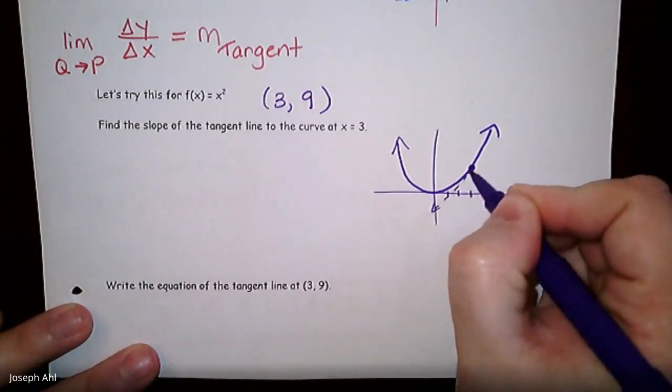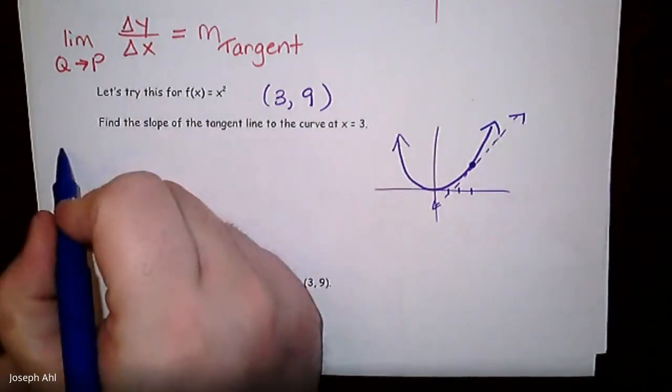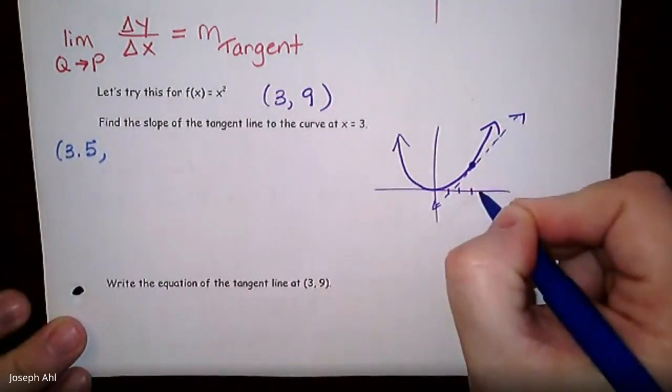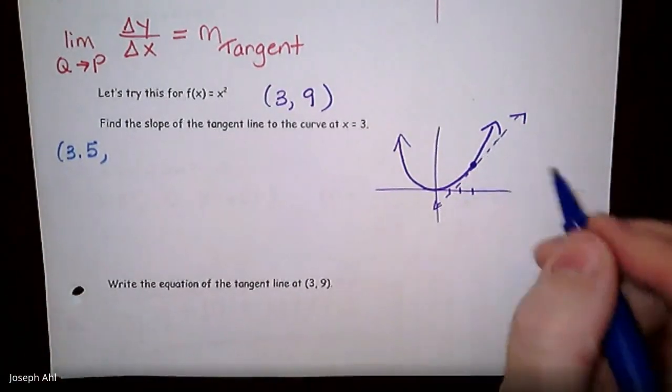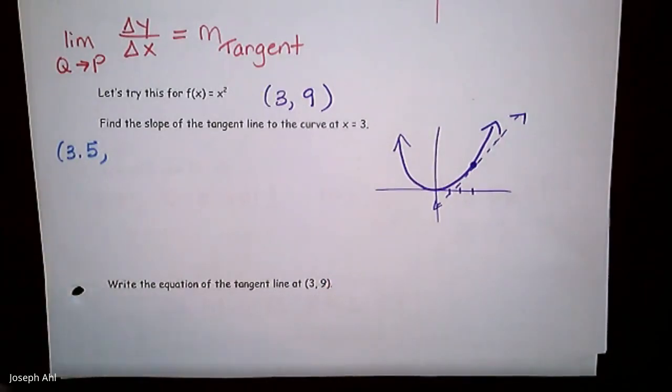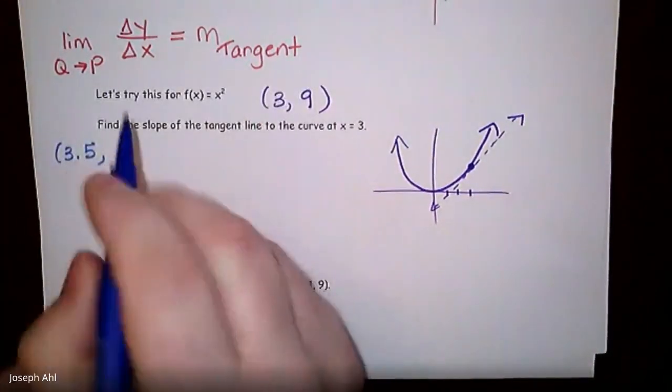So how are we going to find the slope of the tangent line? This line right here. Well, we're going to choose a point that's pretty close by. Let's start by choosing a point that's just a half unit away. What if we choose x to be 3.5? Well, the first thing you have to do is you actually have to find the y value that goes with that then. So plug it into your function x squared for 3.5 squared is 12.25.